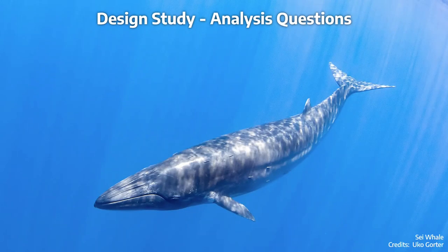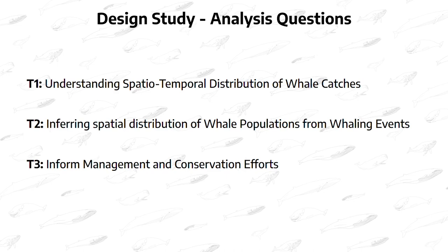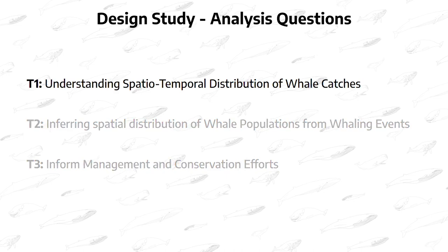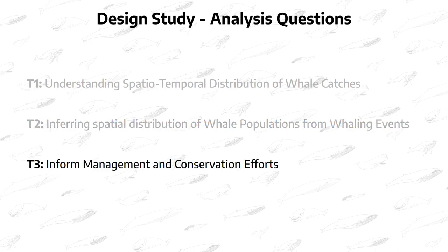From the design study, we gathered a set of 7 analysis tasks across 3 analysis themes. We discuss only the themes here and invite our viewers to read the paper for the constituent analysis tasks. The first analysis theme is concerned with the big picture of how humans hunted whales across space and time, with possible correlations with the physical attributes of the whales caught, like species, sex, and length. The second analysis theme focuses on inferring whale populations from the whaling events. The third analysis theme is concerned with the present and future of conservation efforts.